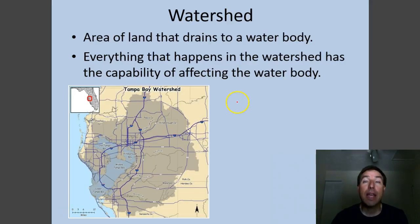An area of land that drains to a water body is called its watershed. The importance is that everything that happens within that watershed has the ability to affect the water body. When it rains, any pollutants or any nutrients that might be in that watershed run off into the nearest water body.